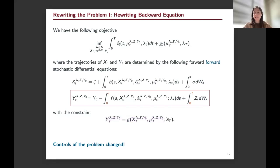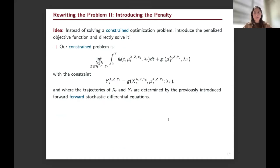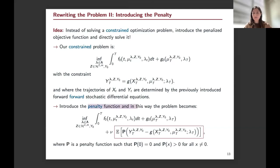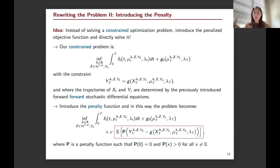We have a constrained problem: we minimize the principal's objective while satisfying the terminal condition constraint, which ensures the Nash equilibrium is found. Since constrained problems are tricky, we introduce a penalty function and add it to the objective. The original objective of the principal now has x and y simulated according to forward-forward SDEs, and at the terminal time we measure the mismatch and apply a penalty weighted by a coefficient nu.